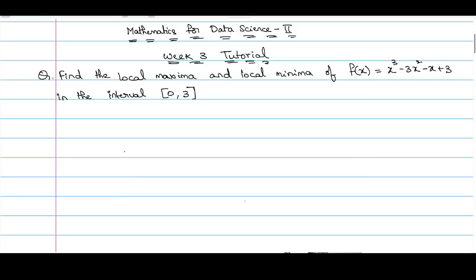Hello everyone. In this video let us solve an example on finding the local maxima and local minima of a given function in a given interval. Our given function is f(x) = x³ - 3x² - x + 3, which is a degree-3 polynomial. We have to find the local maxima and local minima in the closed interval [0, 3].